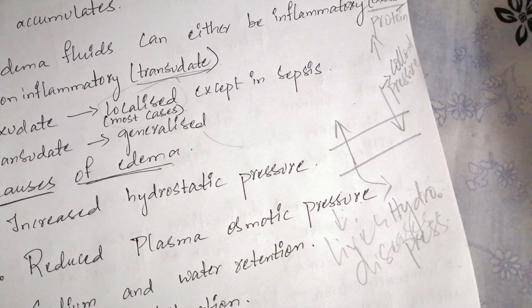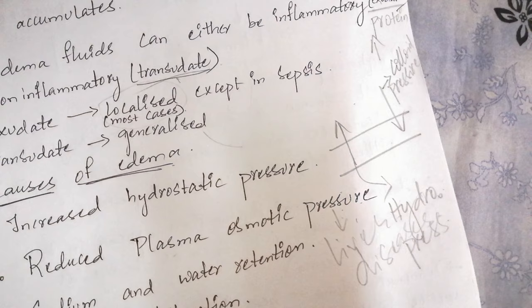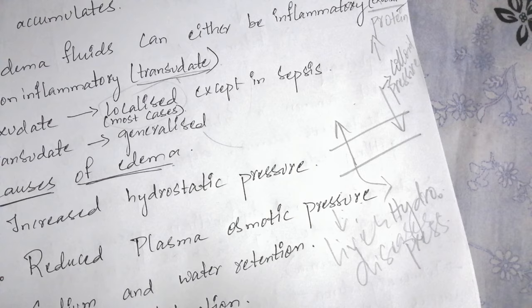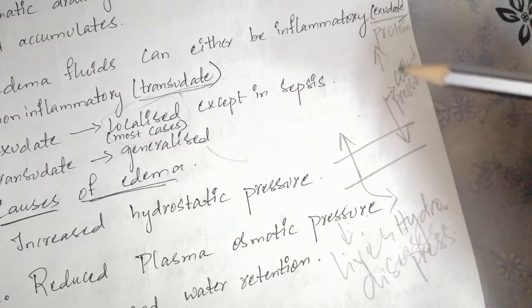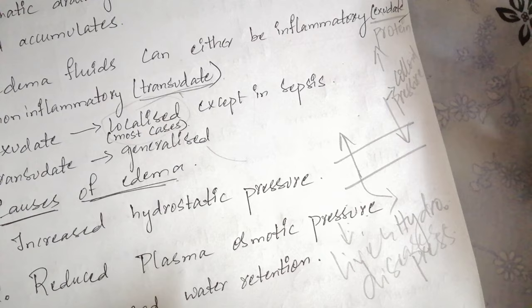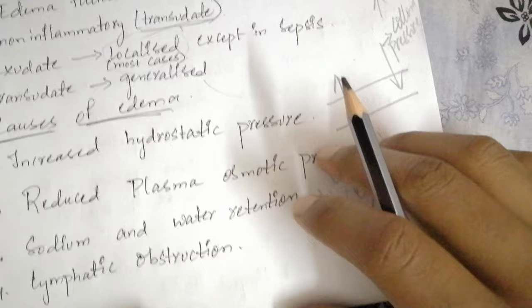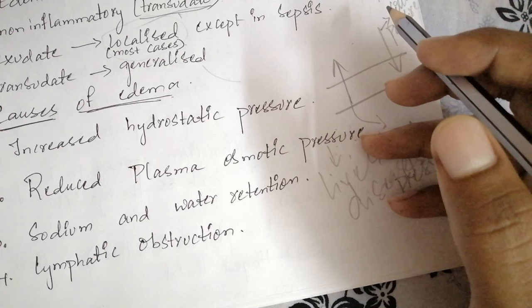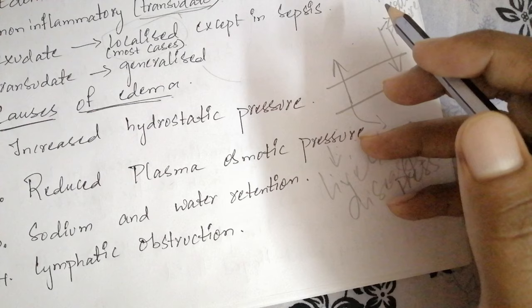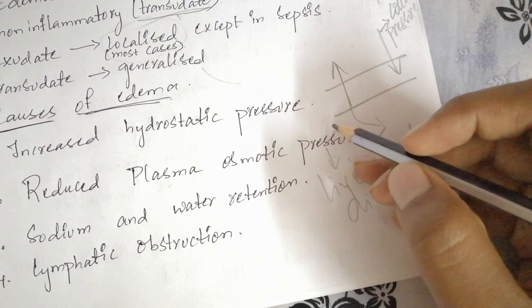Albumin is mainly synthesized in the liver, so liver diseases cause decreased synthesis of albumin, leading to decreased plasma osmotic pressure. Another example is nephrotic syndrome, where glomerular filtration is defective: albumin crosses out through the porous glomerular capillaries, enters the tubules, and is excreted through the urine — excess excretion of albumin takes place.